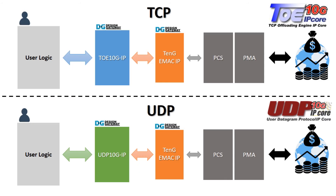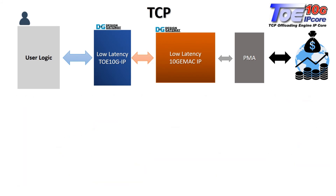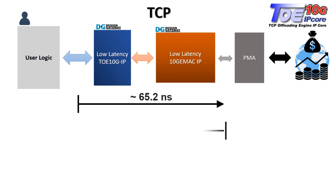The low latency network IP system is the same as the standard IP, and you can replace it with only slight modifications. For the TCP system, we tested the latency: it is around 65.2 nanoseconds for the TX part, and for the RX part we got 52.8 nanosecond latency.